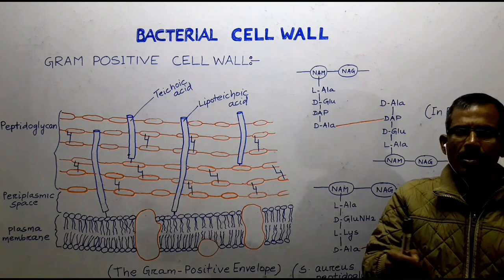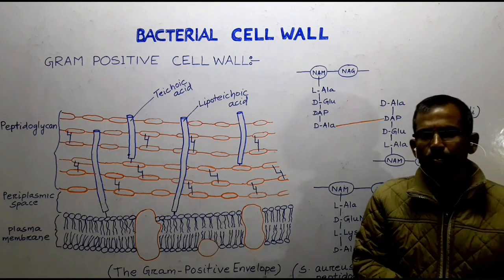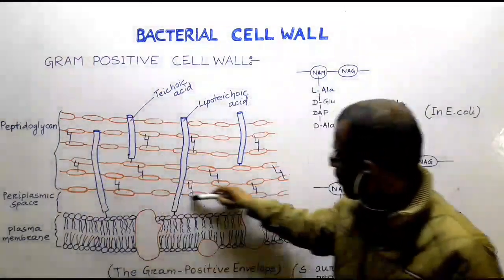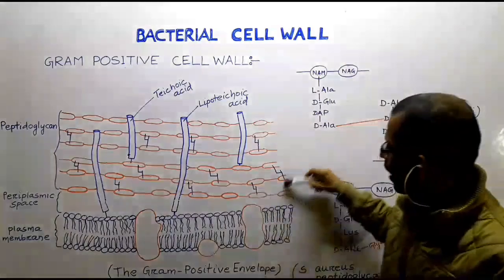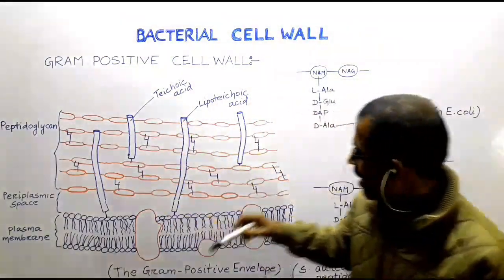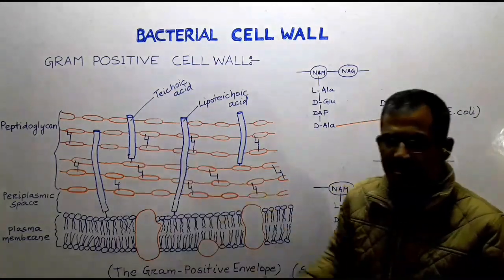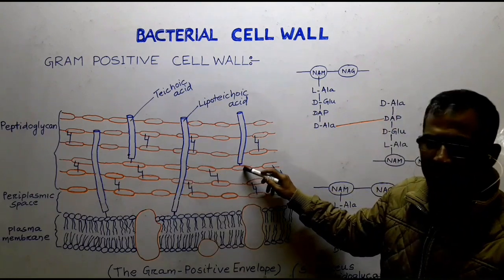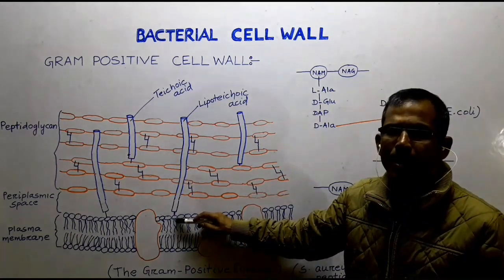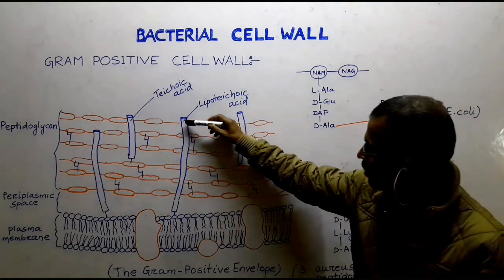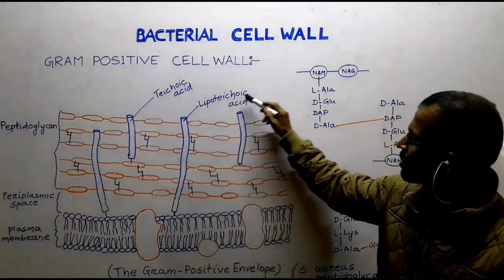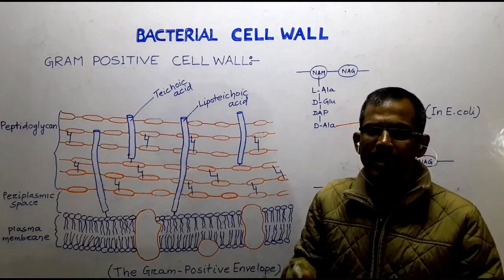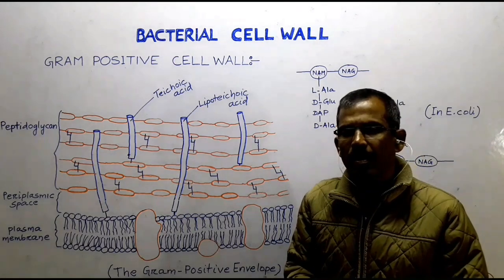Teichoic acids are polymers of glycerol or ribitol joined by phosphate groups. This figure shows the gram-positive envelope with the cell wall composed primarily of peptidoglycan. The teichoic acid molecules remain connected with the peptidoglycan itself or with the plasma membrane lipid. When teichoic acid is connected with the plasma membrane lipid, it is known as lipoteichoic acid. These teichoic acid molecules are negatively charged and provide negative charge to the cell surface of gram-positive bacteria.